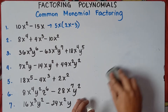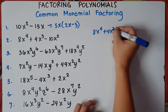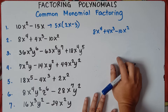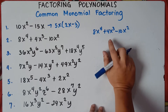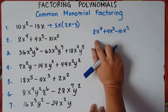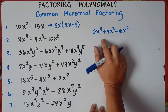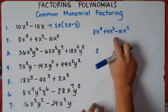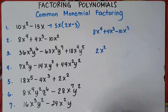Let's try number 2: 8x raised to the power of 4 plus 4x cubed minus 10x squared. Once again, select a number — the GCF — that you can divide by 8, 4, and 10. The GCF would be 2, because we cannot select 4 since 10 divided by 4 gives a decimal answer. So the greatest common factor of 8, 4, and 10 is 2. For the variable, select the variable with the least exponent, which is x squared. So our GCF is 2x squared.